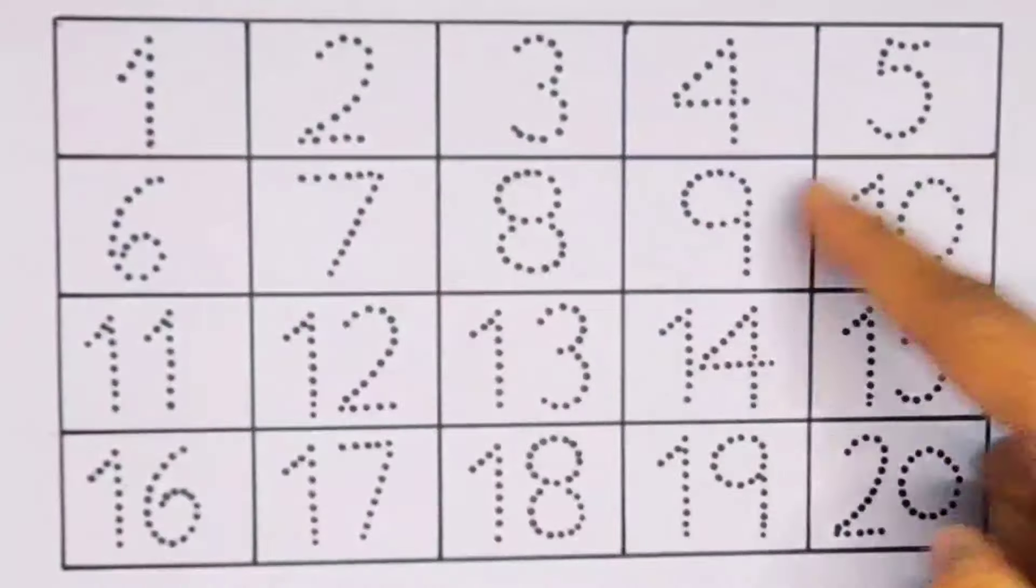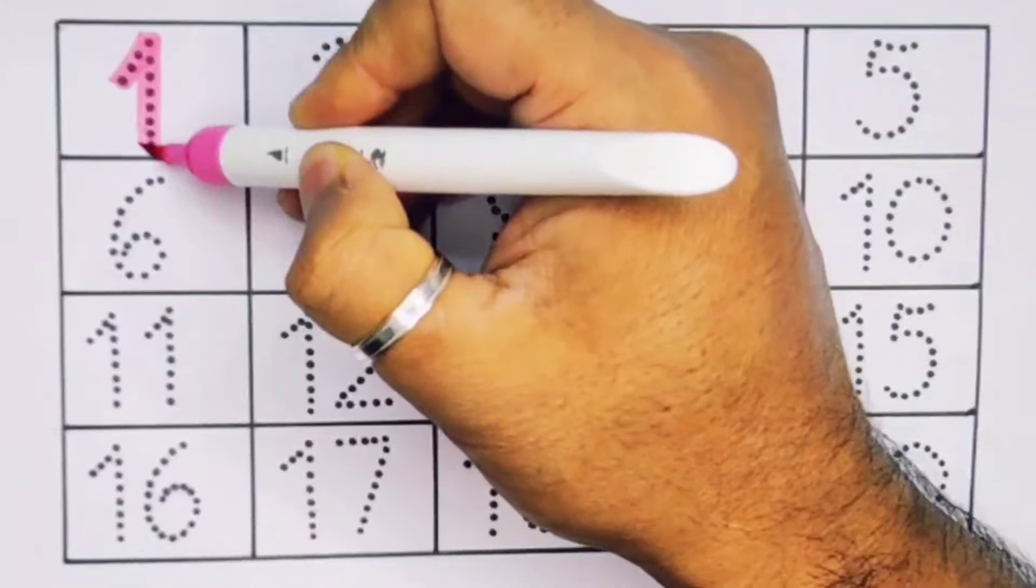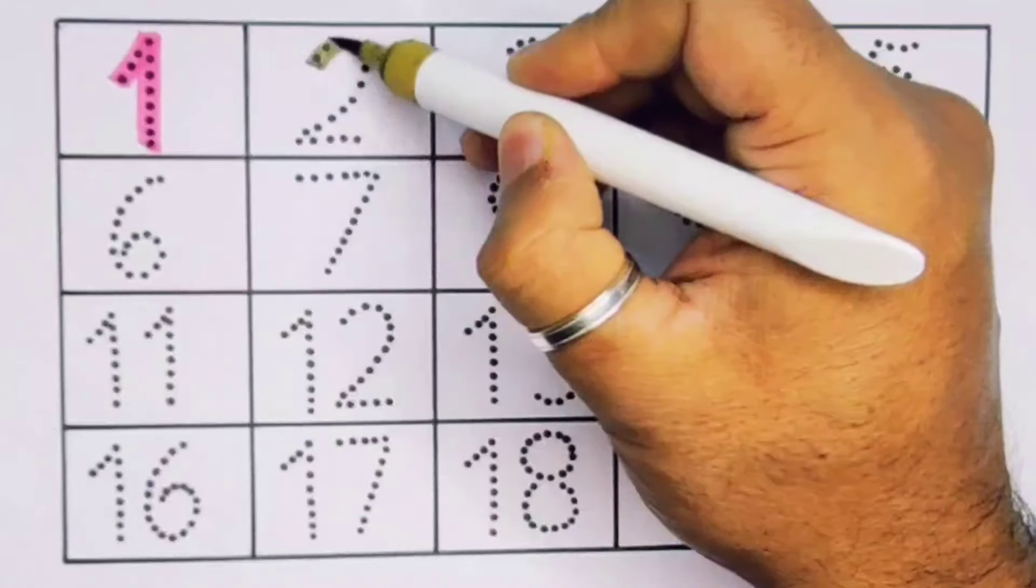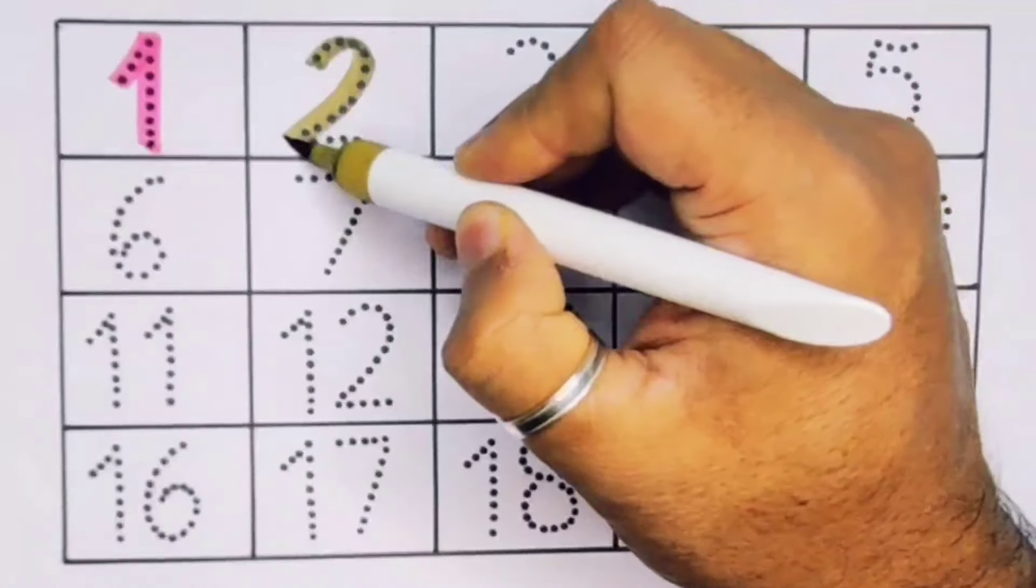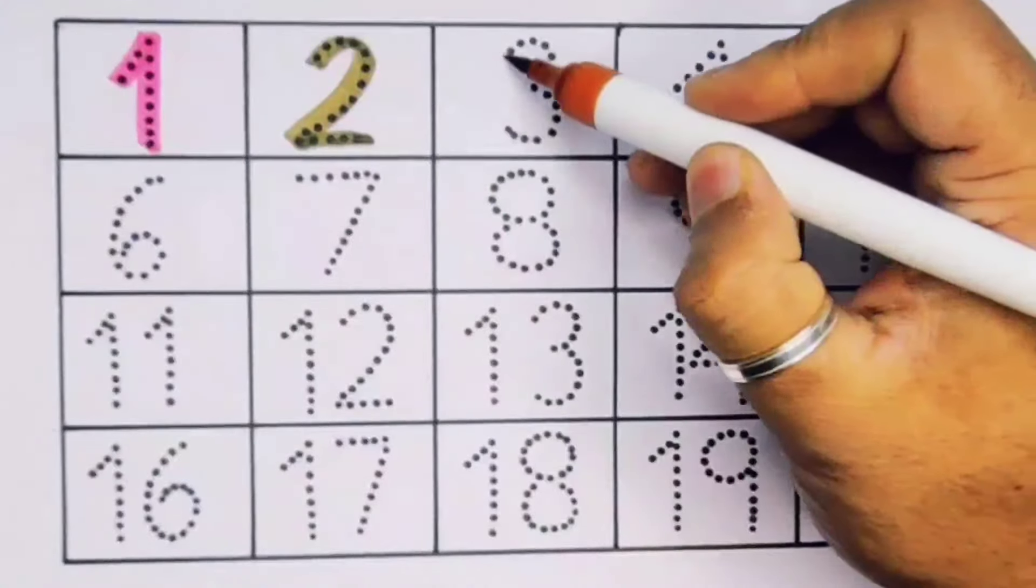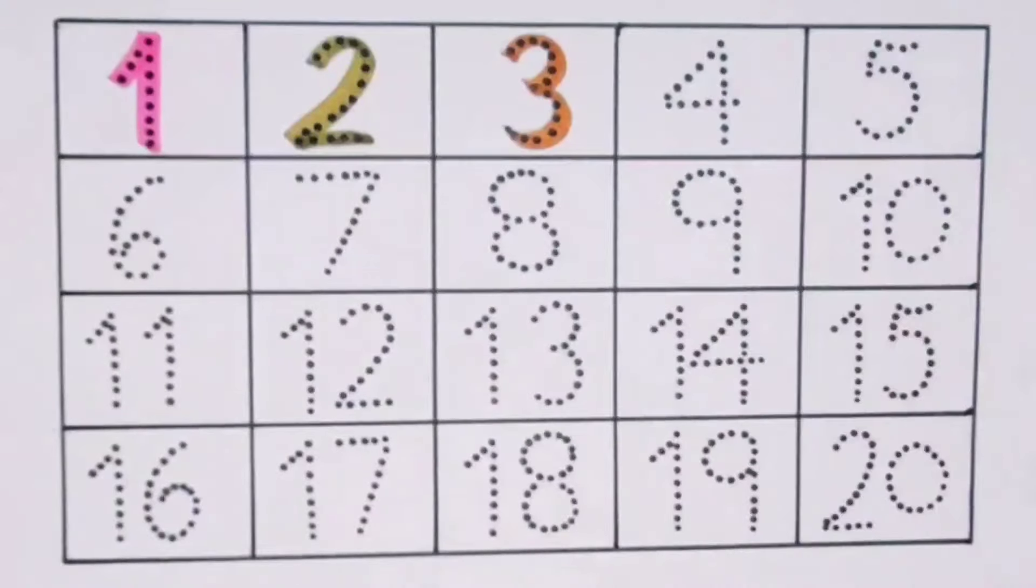Now let's learn the numbers counting 1 to 20. First, one, number one. Next two, number two. Next three, number three.